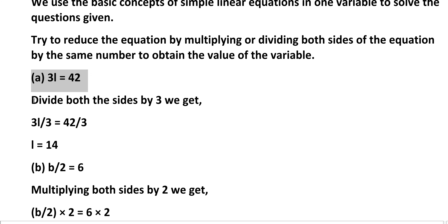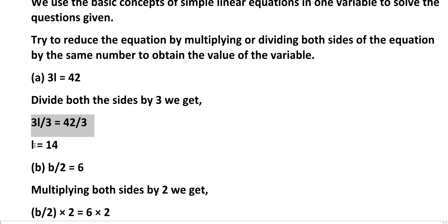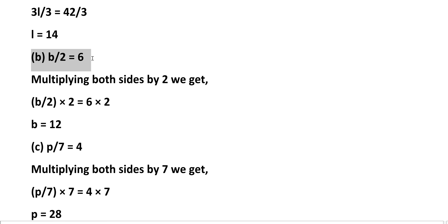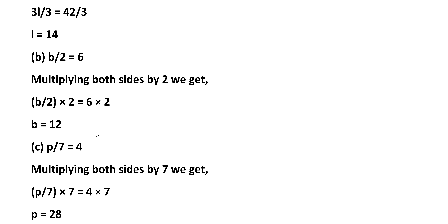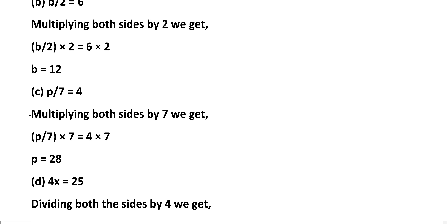A: 3L equals 42. Divide both sides by 3: 3L by 3 equals 42 by 3, that is L equals 14. B: B by 2 equals 6. Multiply both sides by 2: B by 2 into 2 equals 6 into 2, that is B equals 12. C: B by 7 equals 4. Multiply both sides by 7: B by 7 into 7 equals 4 into 7, that is B equals 28.